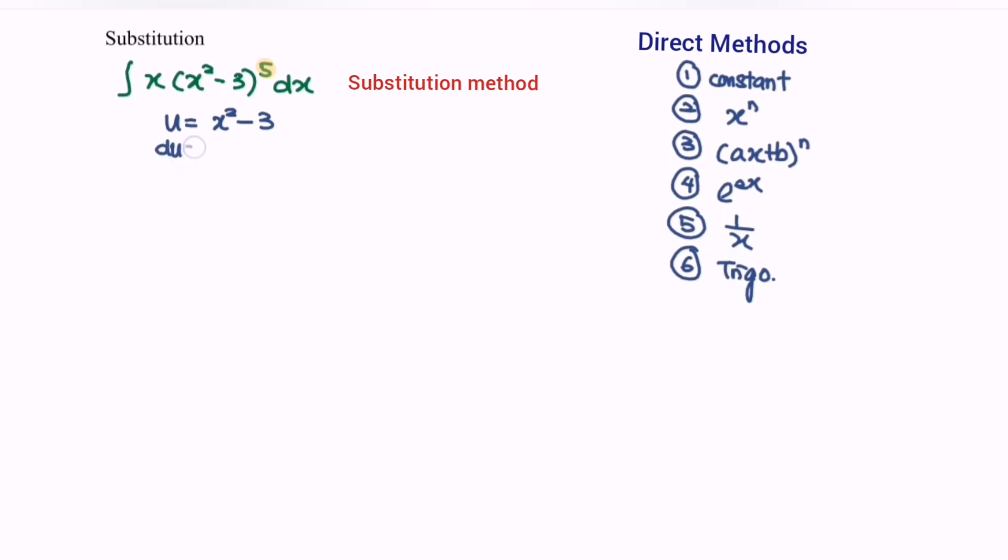Kindly refer to the situation. In this case, we only have dx and x, but for our product we need to do some modification so that it becomes du over 2 equals x dx. Then only we can substitute the situation: integrate u to the power 5.